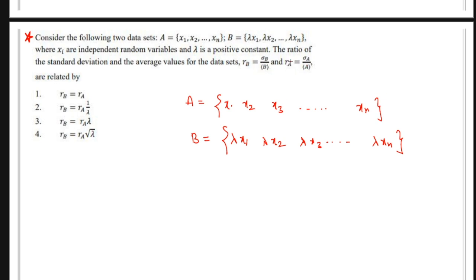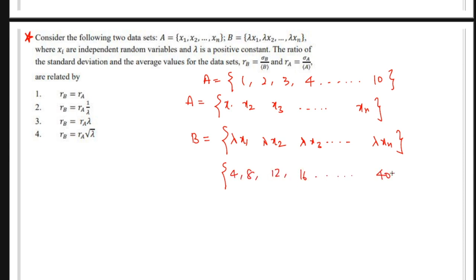Let me explain with an example. Say set A is {1, 2, 3, 4, ..., 10} and set B is {4, 8, 12, 16, ..., 40} — which is set A multiplied by λ = 4. The ratio of standard deviation to mean is called the coefficient of variance. The coefficient of variance does not change when you multiply a dataset by a constant — its position on a graph might shift, the mean changes, but the spread relative to the mean stays the same.